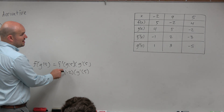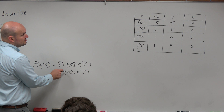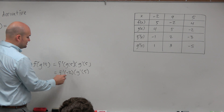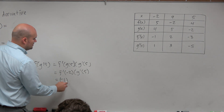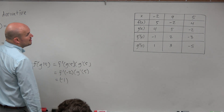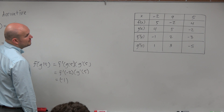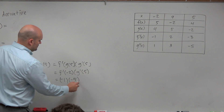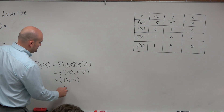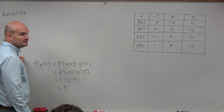F prime of negative 2 is going to be negative 1, and then g prime of 5 is negative 5. So therefore, that answer equals a positive 5.